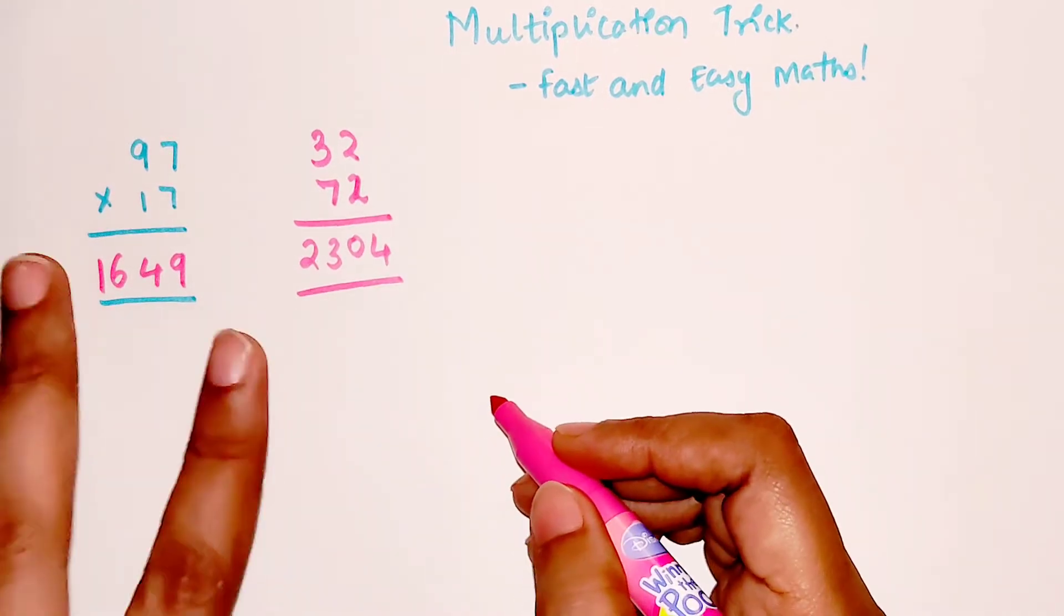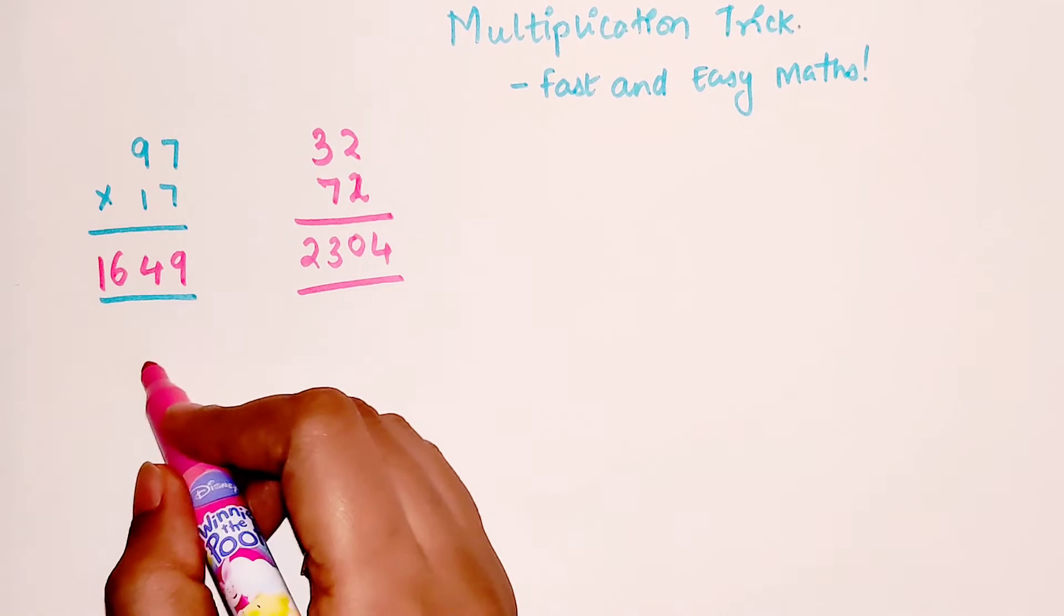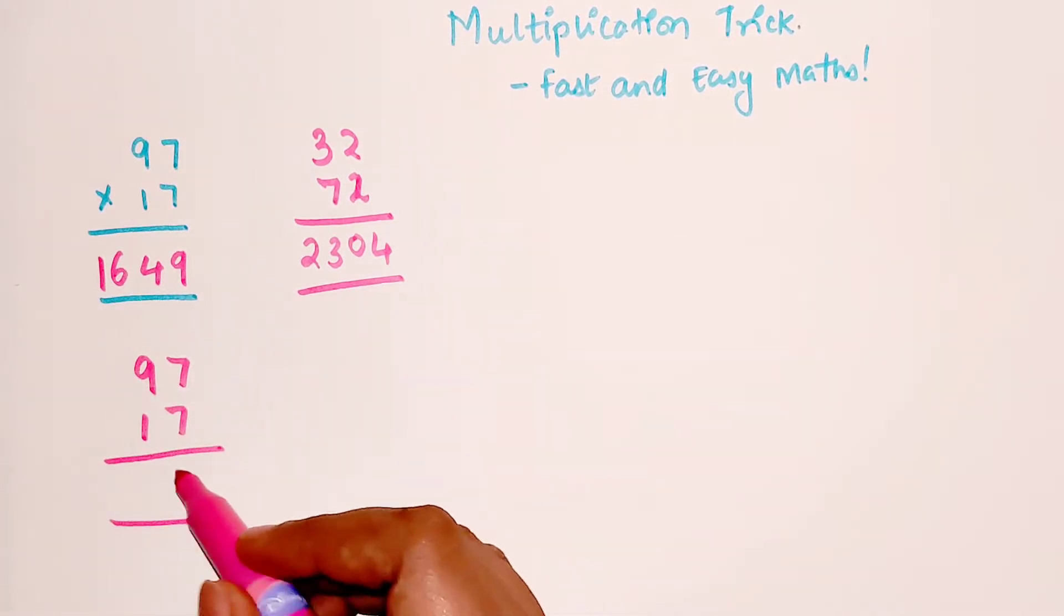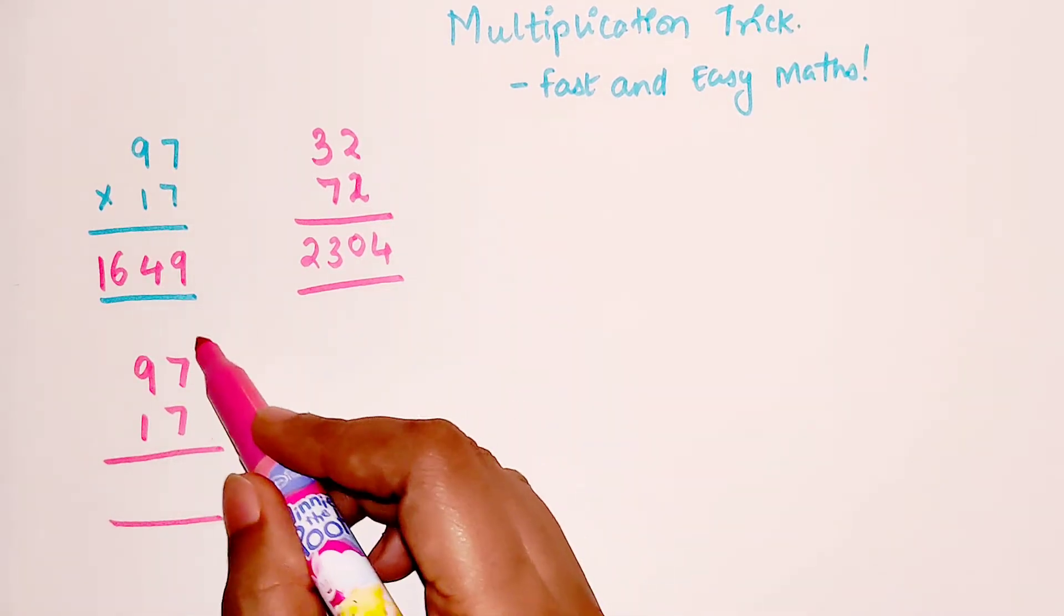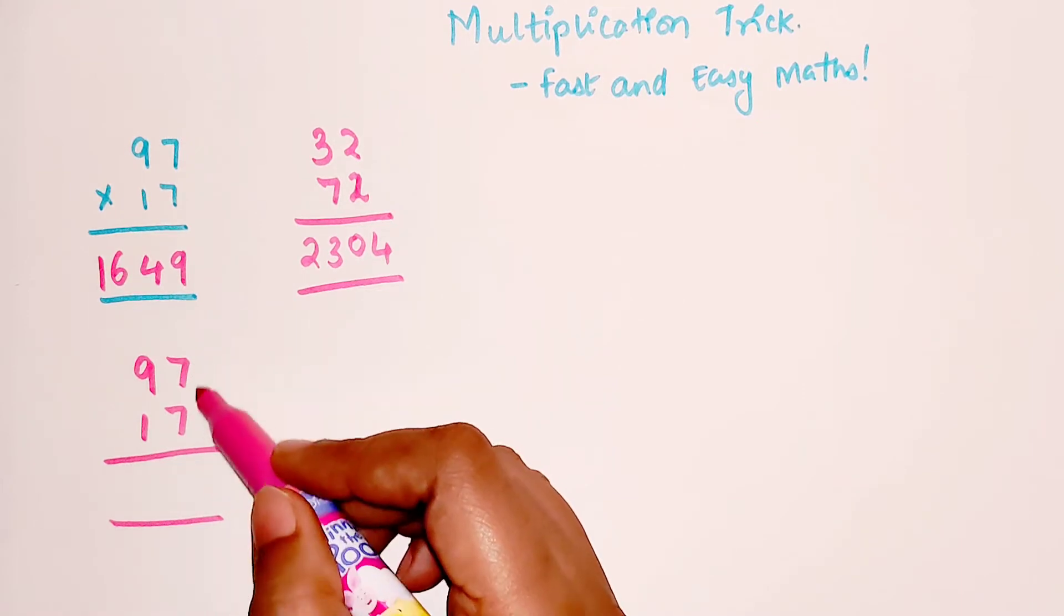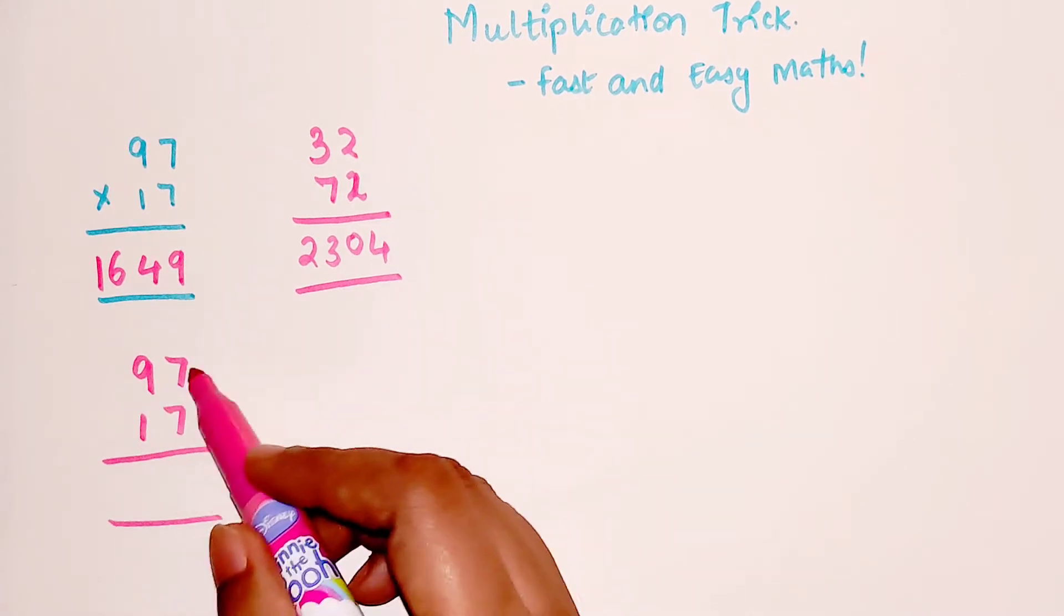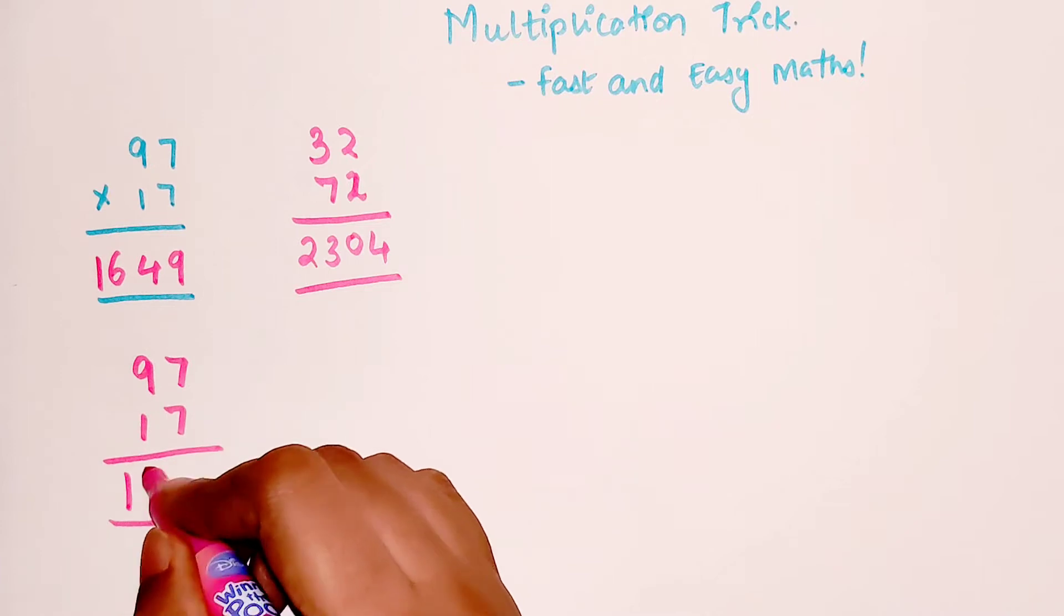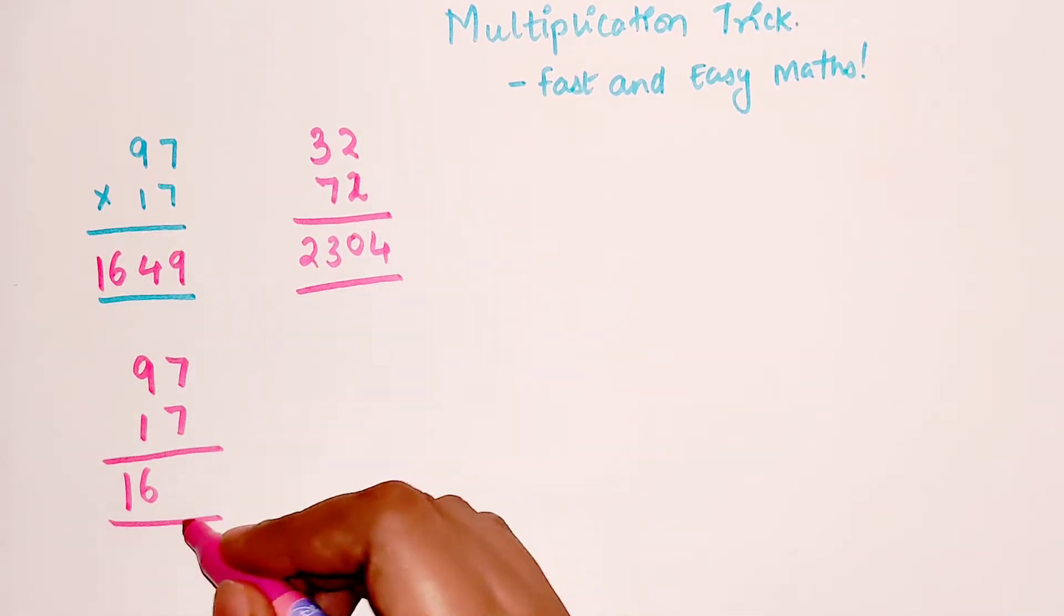So how does this trick work? Let me do this one more time, 97 into 17. What you do is you multiply 9 into 1 which you get 9, and then you add the number which is the unit's digit which is same for both of them. So 9 into 1 plus 7, 9 plus 7 that gets you 16. This is one part of your answer. And the next part is nothing but square of the last digit which is 49.